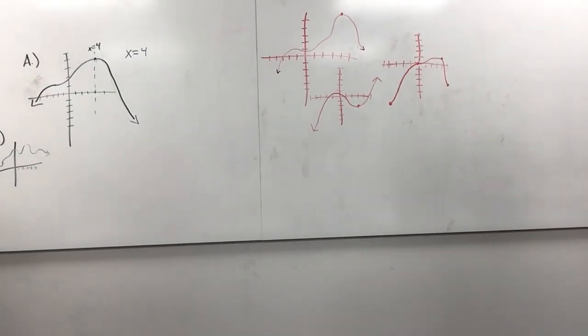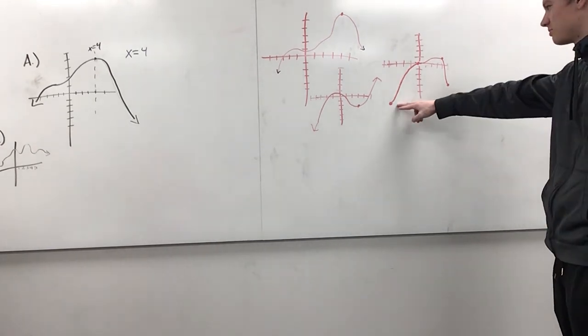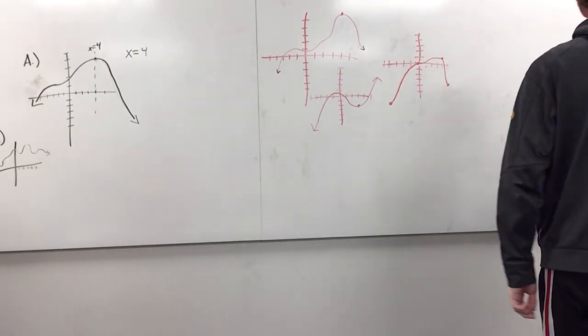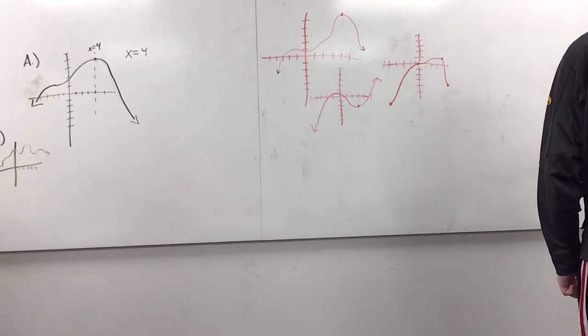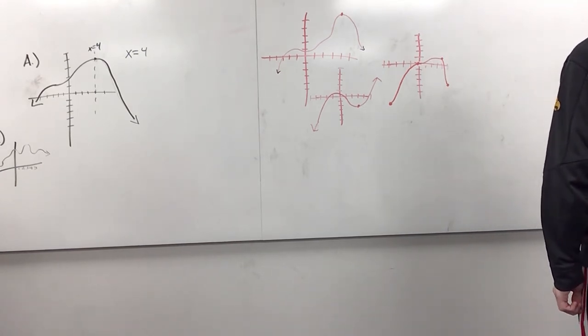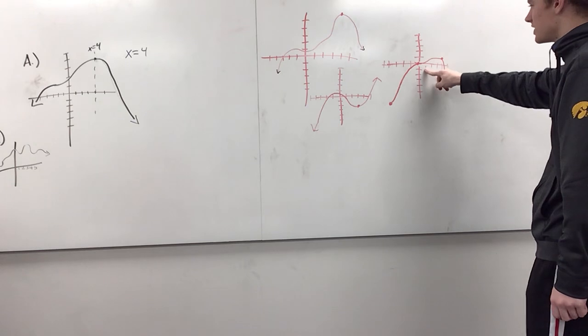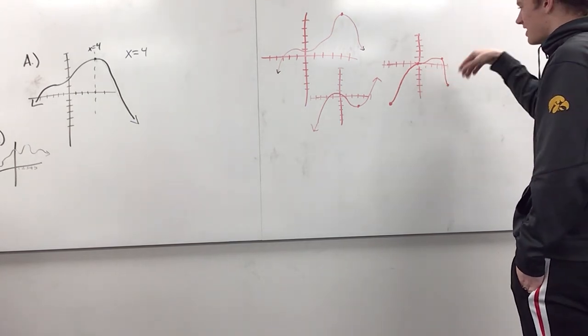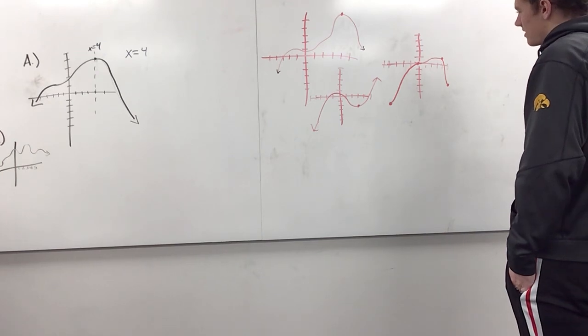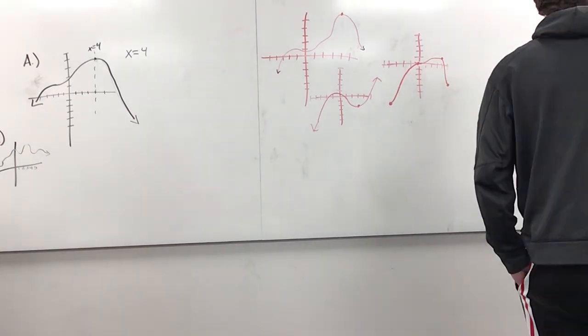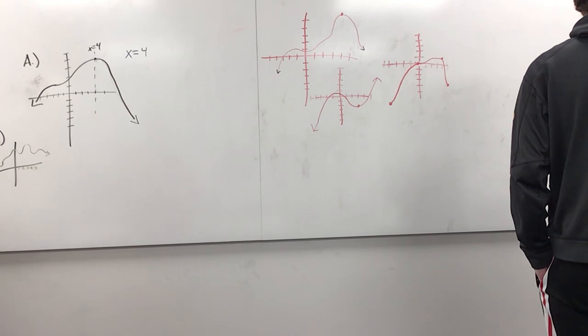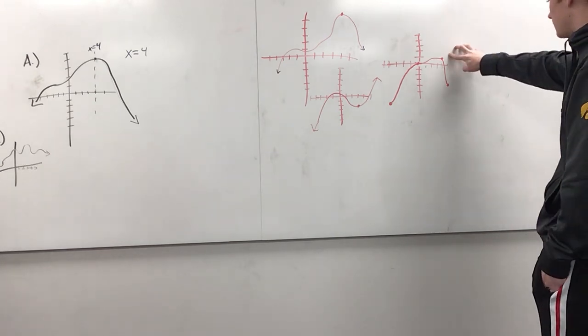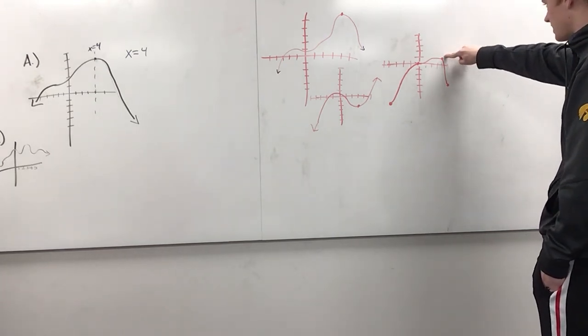The first thing is an absolute minimum at negative 4, so I wanted this point to be the lowest of all of them. And then a local maximum - I tried to make it not the highest point because it's local, but higher than between the two. And then the absolute maximum was at x equals 4, so I put that just slightly higher.